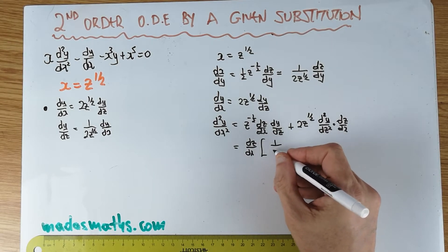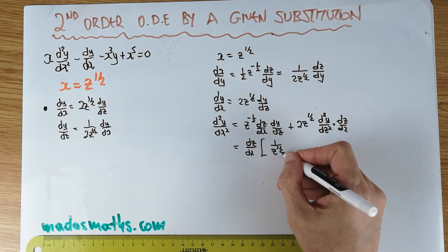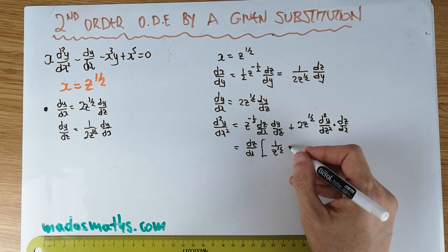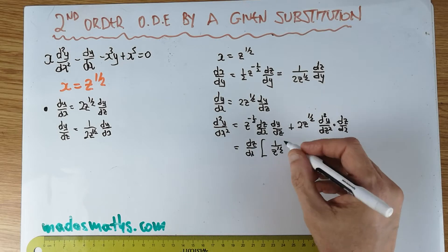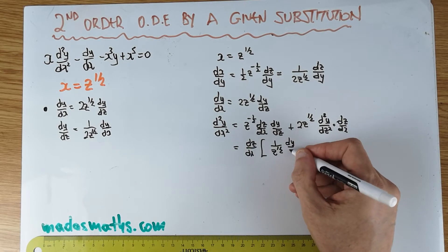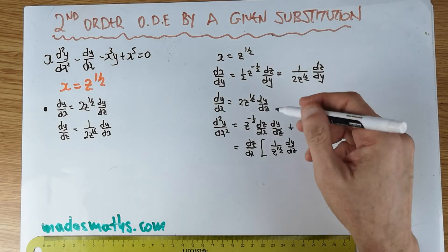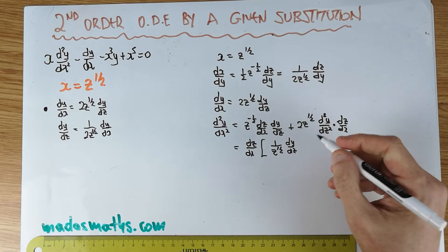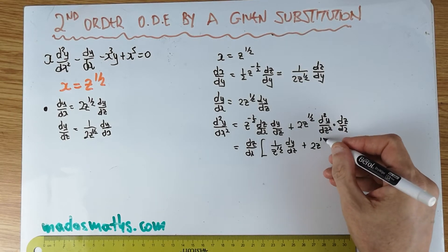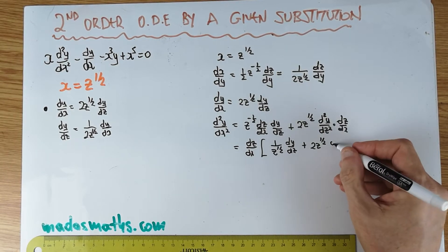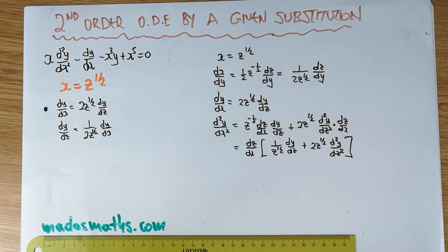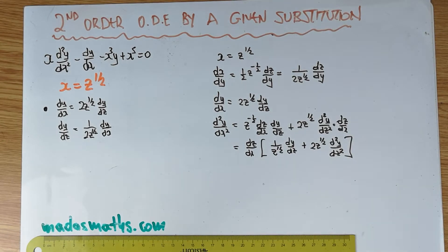And then I have 1 over z to the half. That has been factorized. dy by dz. dy by dz is of course dy by dz. That's this bit here. Let's check that. This has gone out. That I flipped it already at the bottom. And then we got plus 2z to the half and a second derivative. That has been factorized.